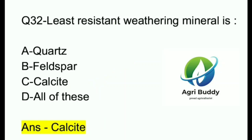Question 32. Least resistant weathering mineral is? A. Quartz. B. Feldspar. C. Calcite. D. All of these. And the answer is Calcite.